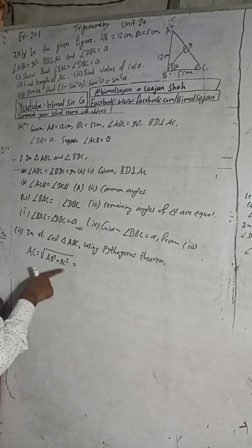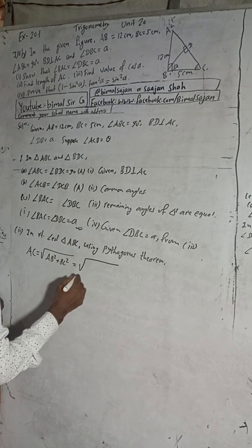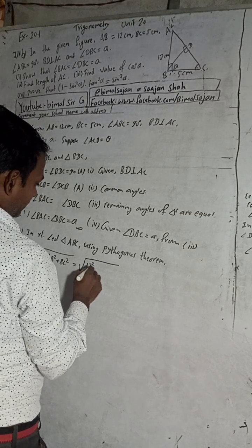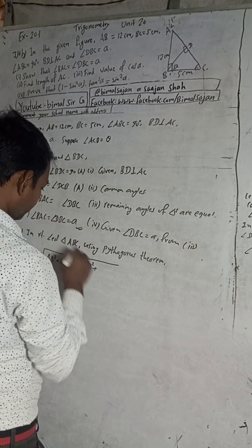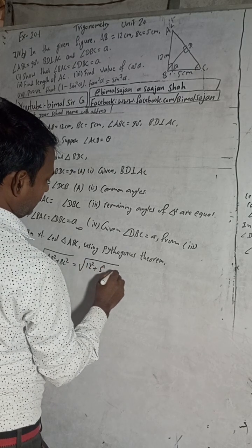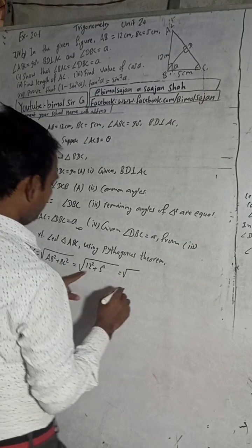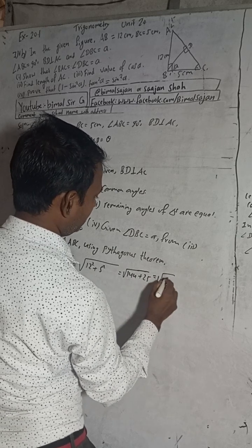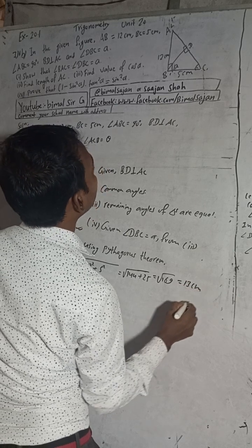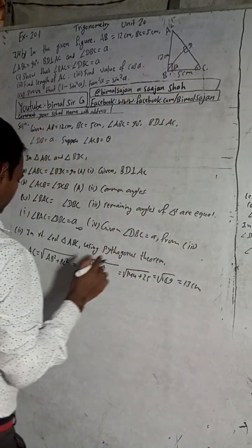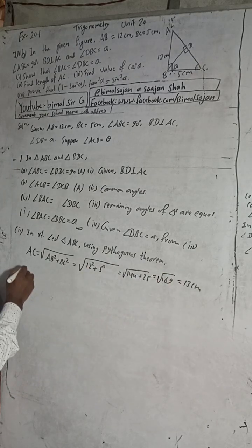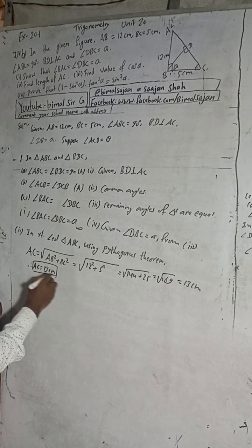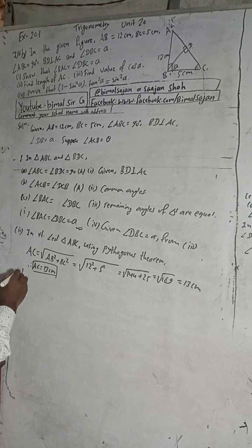Here AB is the perpendicular and BC is the base. Substituting: AC = √(12² + 5²) = √(144 + 25) = √169 = 13 cm. Therefore AC = 13 cm.